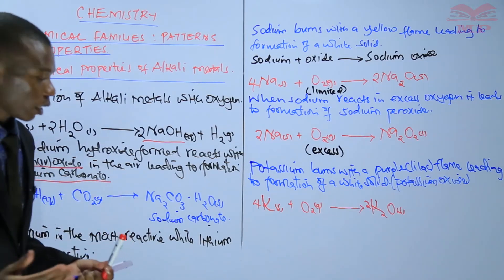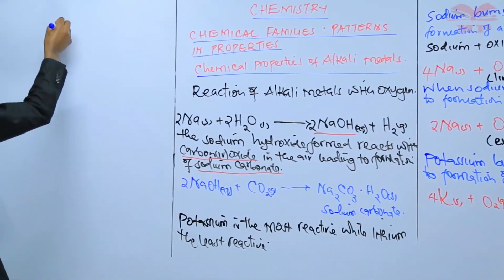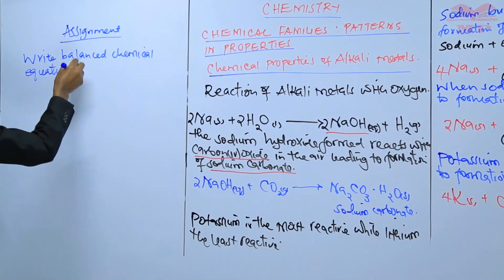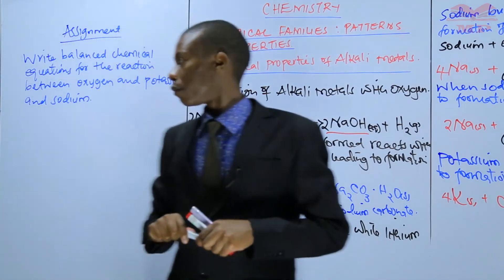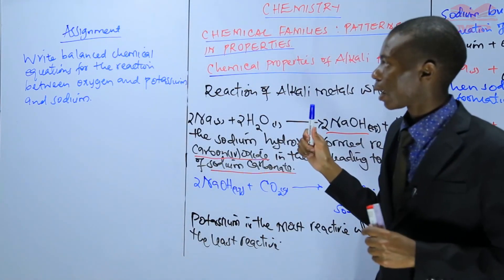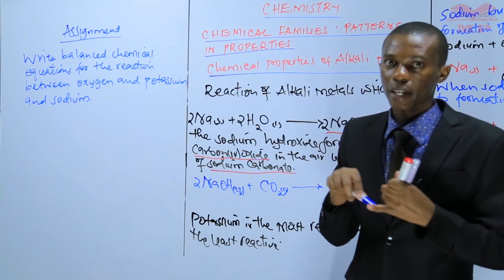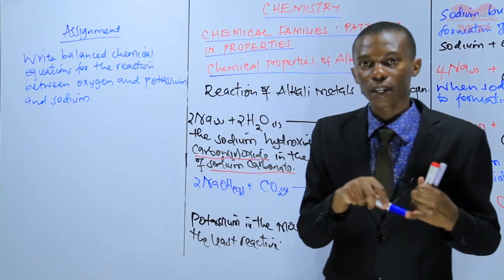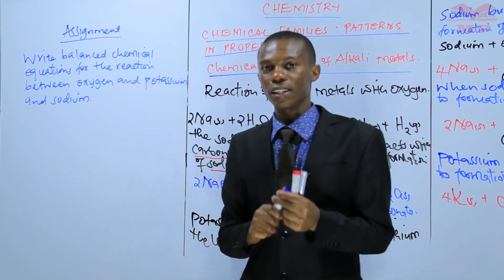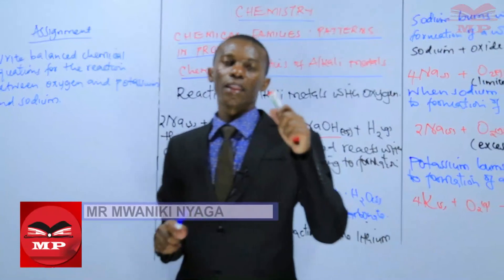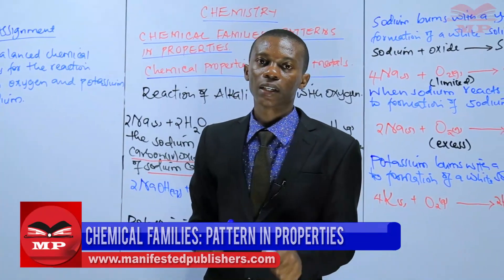That brings us to the end of our lesson today. The assignment is: how do you write a balanced chemical equation for the reaction between oxygen and potassium, and between oxygen and sodium? Write a balanced chemical equation showing how both of them react with oxygen. In the next lesson, we are going to discuss the chemical property of how alkali metals react with water. See you in the next lesson.